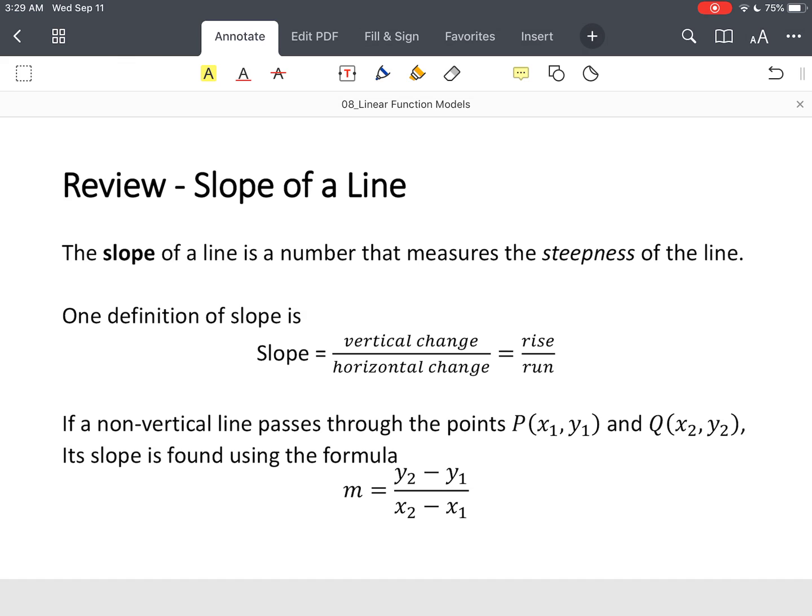Alright, and so now a formula to find slope. If you're given two points, so you have to have two points. So that first point, let's call it P. Second point, let's call it Q.